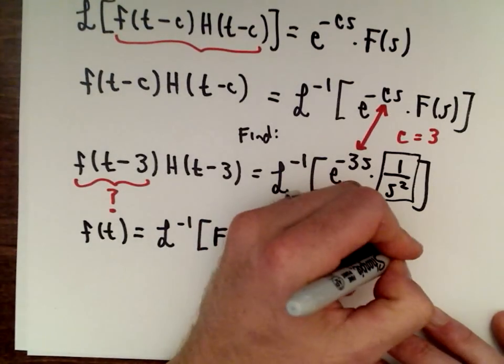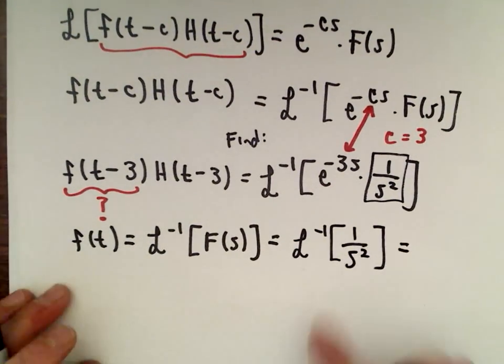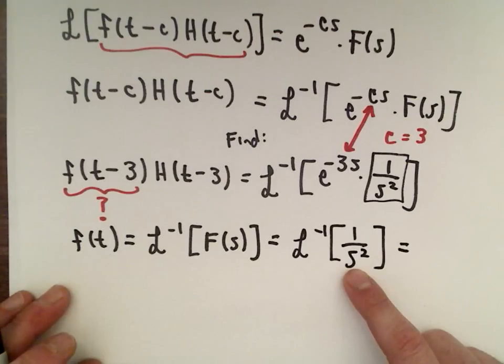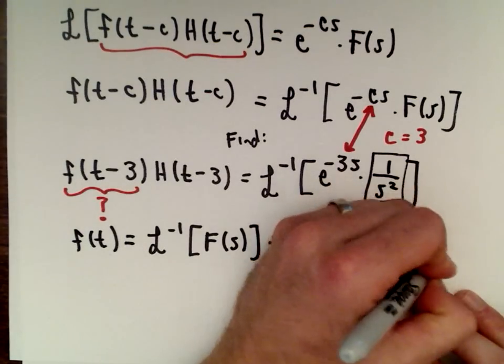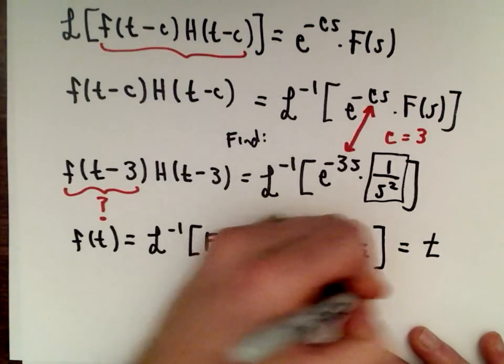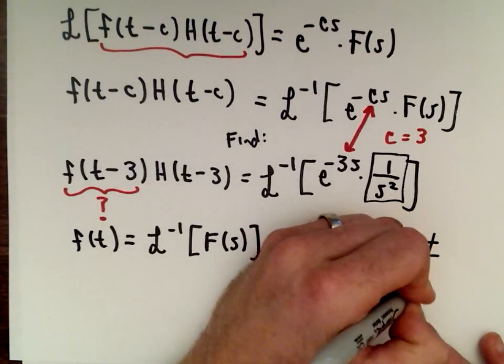And again, just by using a table of values, if you've got a table of Laplace transforms, the inverse Laplace transform of 1 over s squared is just going to be equal to t. So again, to get this, I'm just using a table of Laplace transforms.